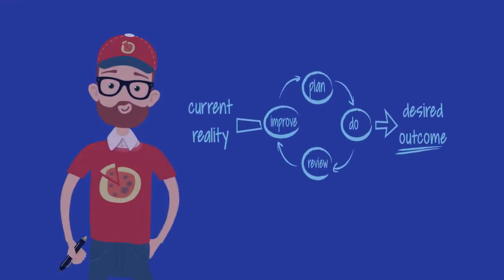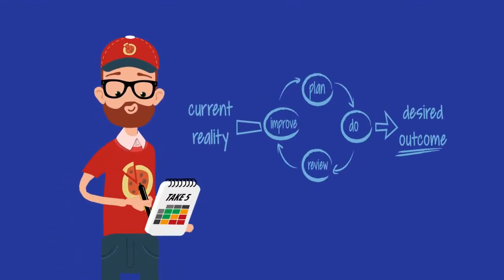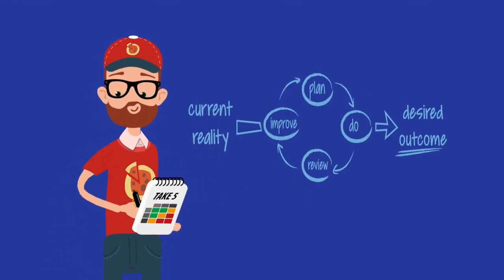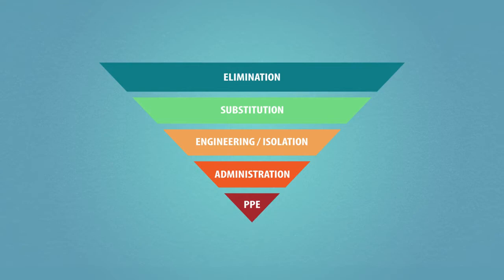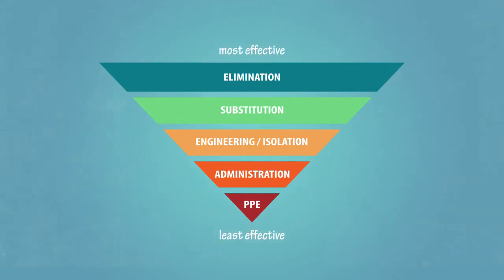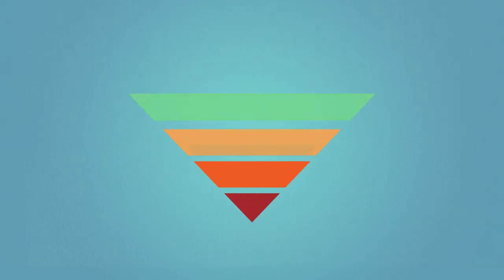Plan and implement controls to eliminate or reduce risks before you proceed with your task. Some types of controls are more effective than others. Use the hierarchy of controls to choose the best method.